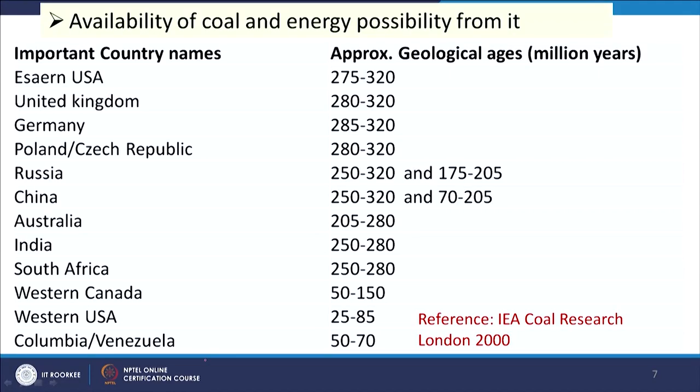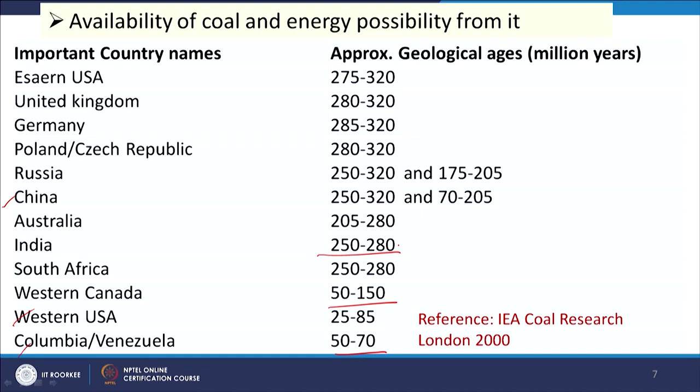Now we look at the availability of coal — is it available equally across the globe? Coal is available in higher amounts in specific regions in certain countries: Eastern USA, United Kingdom, Germany, Poland, Russia, China, Australia, India, South Africa, Western Canada, Western USA, and Colombia. The geological ages of these coal deposits range from 275–320 million years in some regions, 50–70 million years in others, and 50–150 million years elsewhere. For India, this report indicates an age of 250–280 million years.